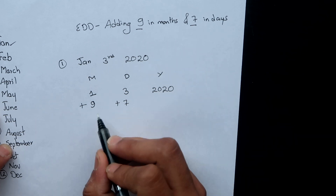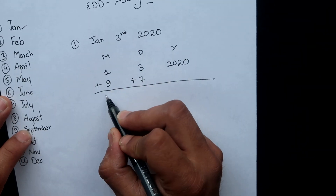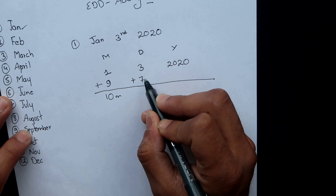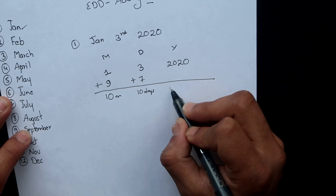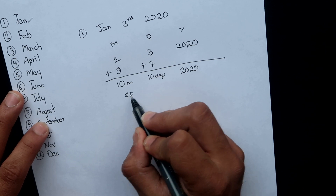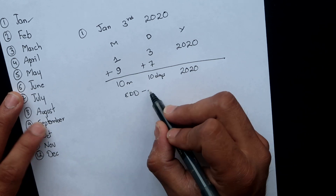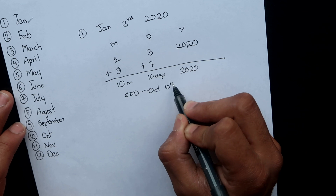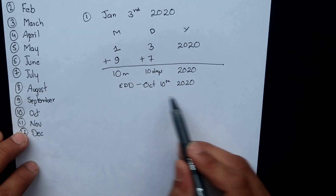Now let's apply the formula. We add nine to the month and seven to the day, and leave the year the same. So we get Month 10, Day 10, Year 2020. The estimated date of delivery is October 10, 2020.